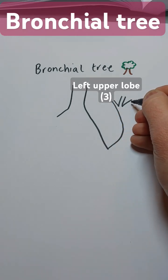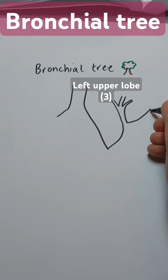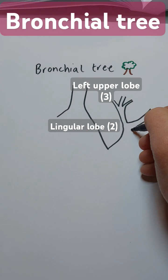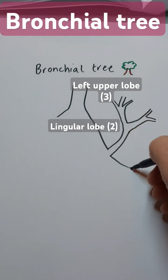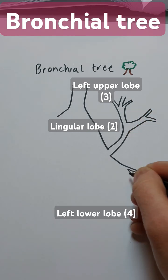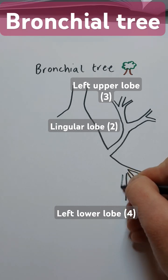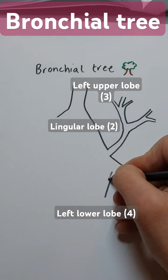The left main bronchus is about 5 centimeters long and lies more horizontally over the heart, about 45 degrees off the midline. And the right main bronchus is about 2.5 centimeters long and straight, about 25 degrees off the midline.